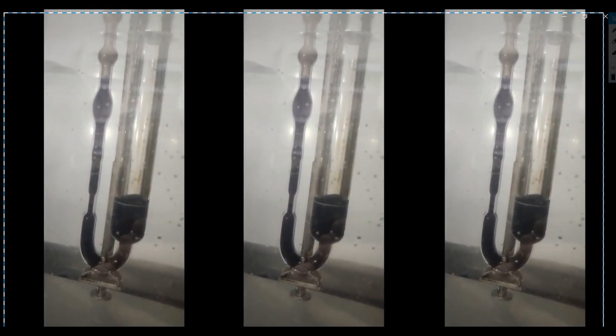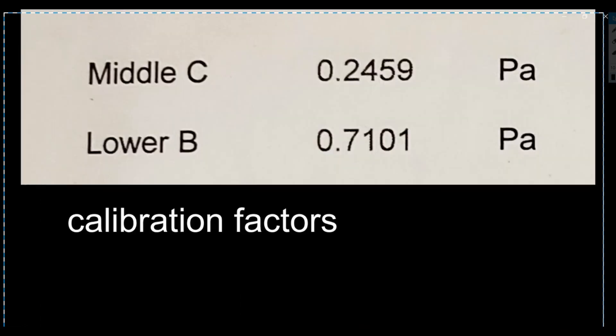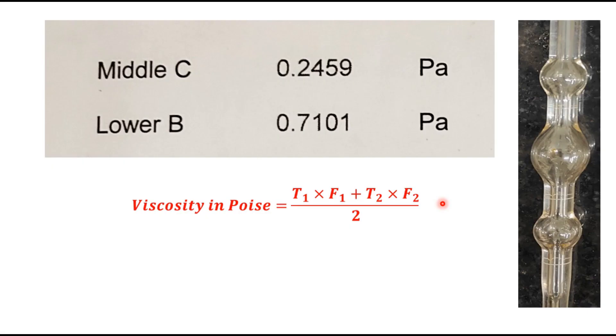Then the measured time is multiplied by the calibration factor for the viscometer tube and this factor is supplied by the tube manufacturer. So, these are the calibration factors.